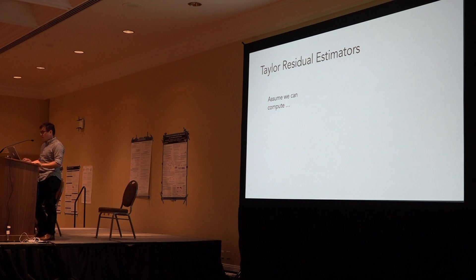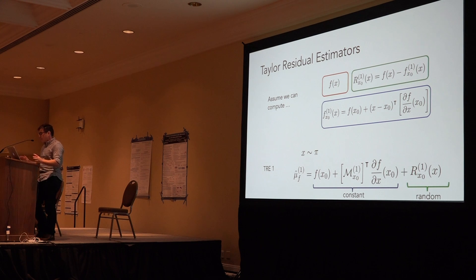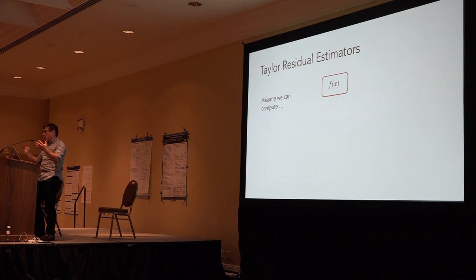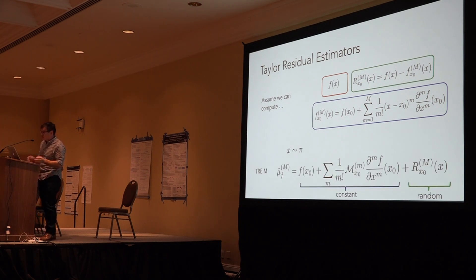Putting all of this together, assuming we compute f of x and assuming we can compute some first order Taylor expansion about x0, this residual is simply this difference. We can write out the first order Taylor residual estimator by first sampling from pi, and then computing this closed form expectation of the Taylor term, and then simply using a Monte Carlo approximation of the residuals. This generalizes to higher order moments. Assuming we compute the nth order Taylor expansion about x0 and the nth order residual, again it's just this difference. The nth order Taylor residual estimator can be computed by sampling from pi, computing this closed form expectation which now relies on the first m moments and the first m derivatives of our function, and then again estimating the residual with Monte Carlo.